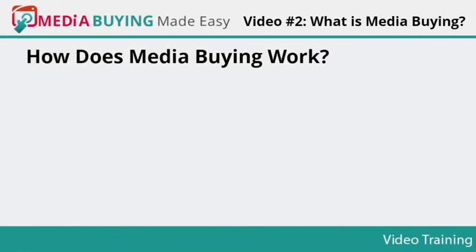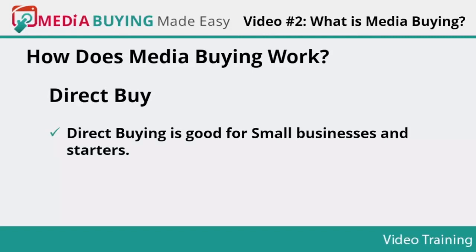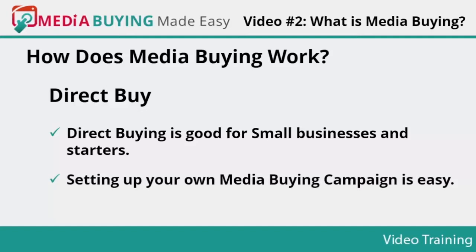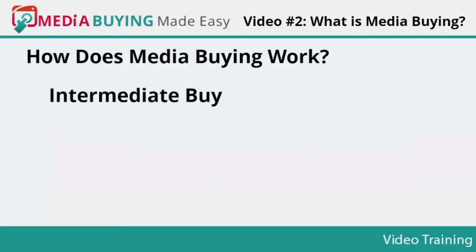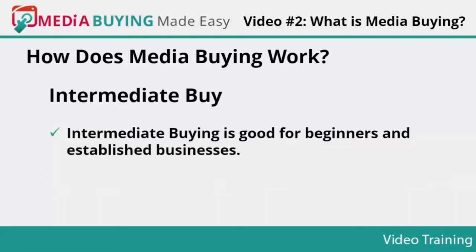How does media buying work? Media buying is one of the most consistent and definitive traffic sources to achieve long-term goals by buying ad space on websites that recognize your needs and serve ads to relevant audiences. There are three types of media buying methods. Direct buy: direct buying is good for small businesses and starters — you can directly buy the ad space by dealing with the owner. It is affordable and helps you build relations with the site owner. You can go for a direct media buying strategy with particular website owners related to your niche.